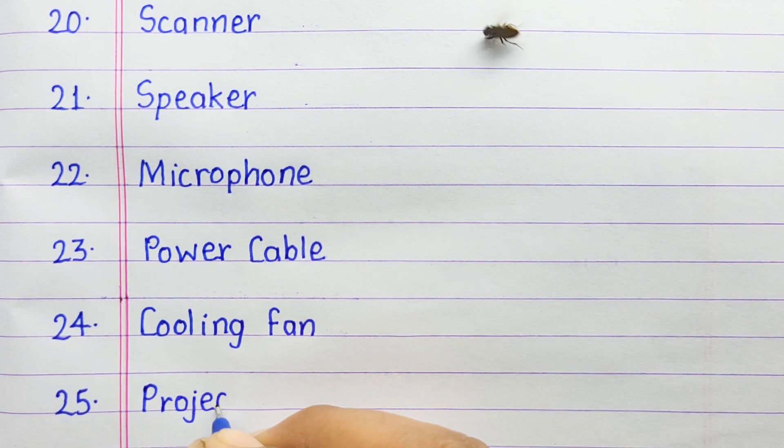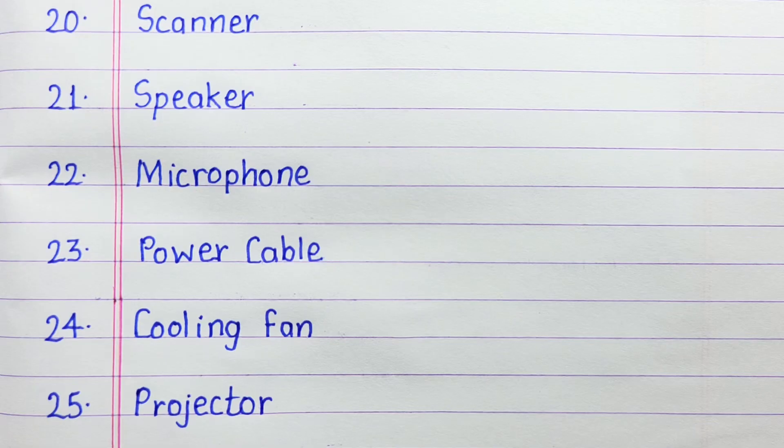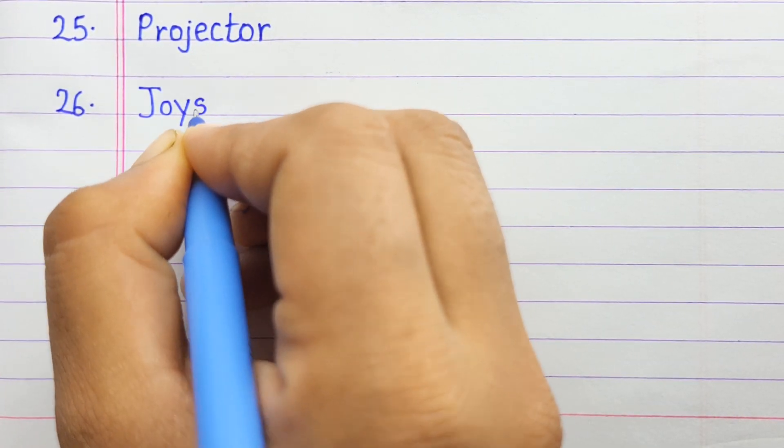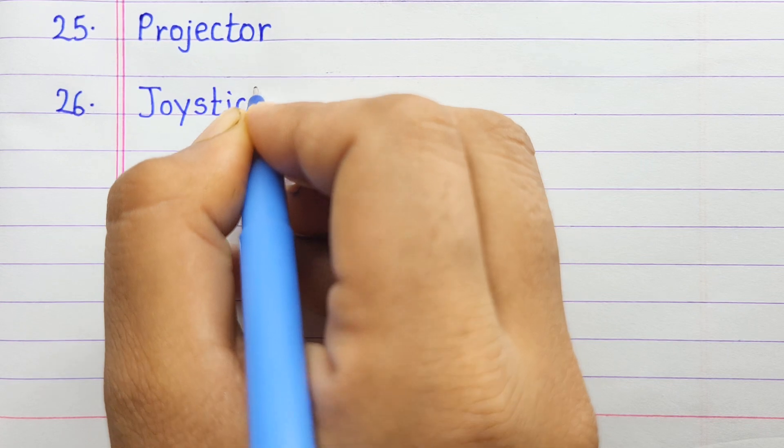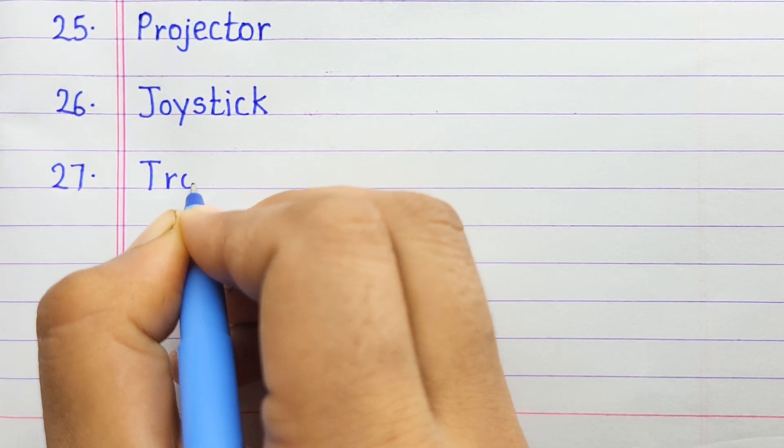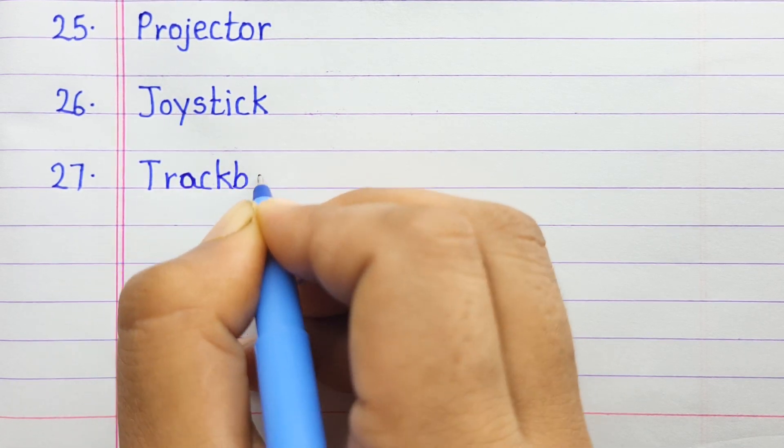Number twenty-five: projector. Number twenty-six: joystick. Number twenty-seven: trackball.